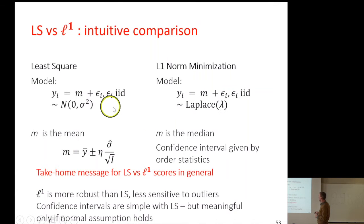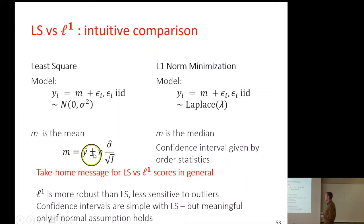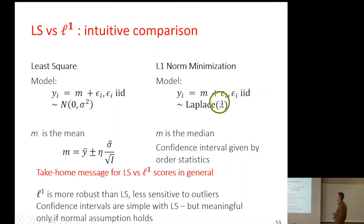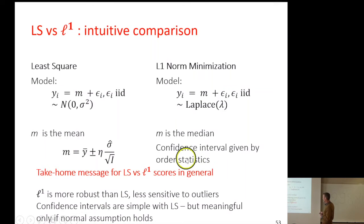If we compare how we obtain confidence intervals, the big linear regression theorem gives a confidence interval. We know the confidence interval for the mean requires estimation of the standard deviation and Gaussian noise. If what we're estimating is the median — which is what we do with L1 minimization — the confidence interval is given by order statistics. So L1, Laplace noise, and order statistics all go together.